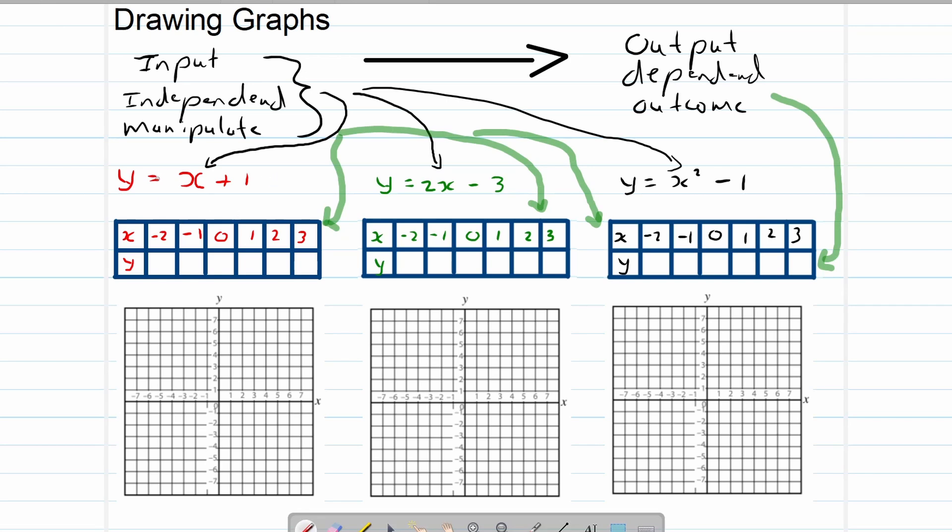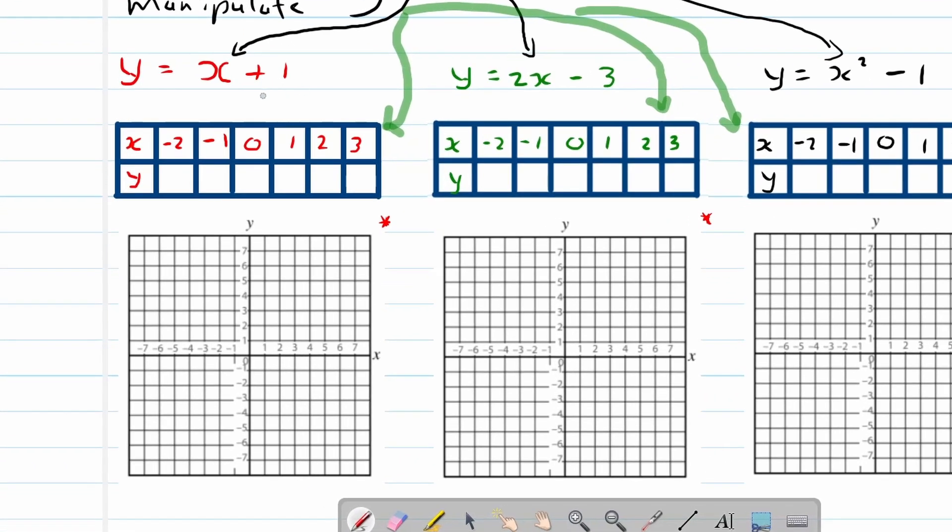Remember input to output, independent. So the y value is dependent on our input value. This is not a manipulated one, this is the outcome. This is the outcome of our calculation. And if we look at them, they're the ones that will be calculated, the y values, the vertical axis on our Cartesian plane.